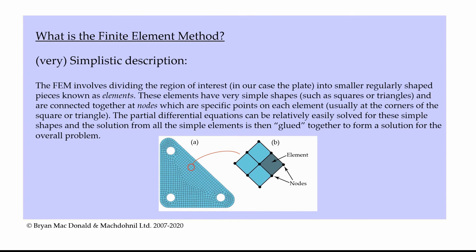A very simplistic description of the finite element method is as follows. The FEM involves dividing the region of interest — in our case the plate — into smaller regularly shaped pieces known as elements. These elements have very simple shapes such as squares or triangles, and they're connected together at nodes, which are specific points on each element, usually at the corners. The partial differential equations that govern the problem can then be relatively easily solved for these simple shapes, and the overall solution from all the simple shapes can be glued together to form a solution for the overall problem.